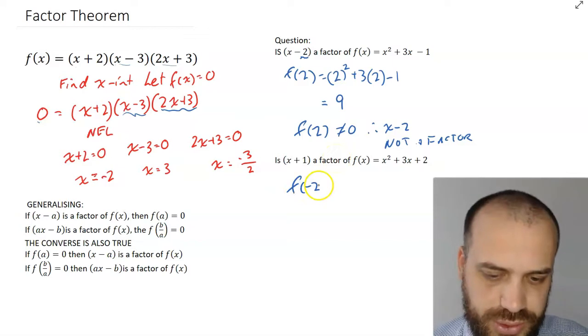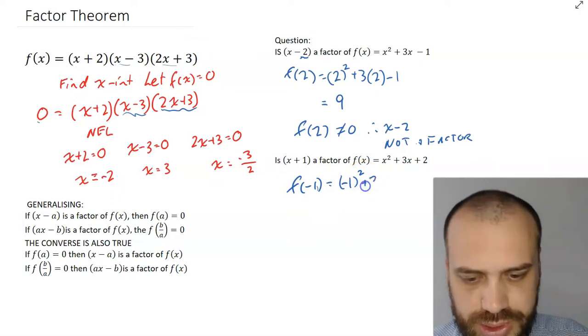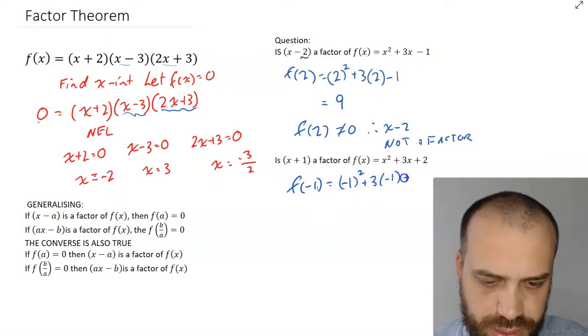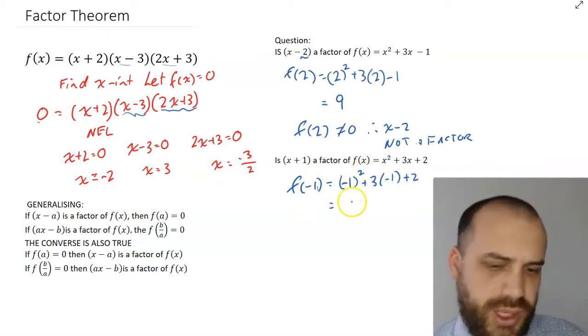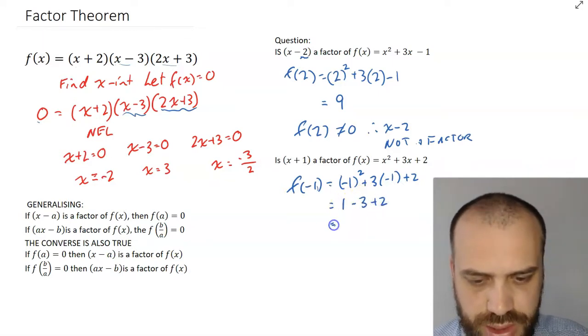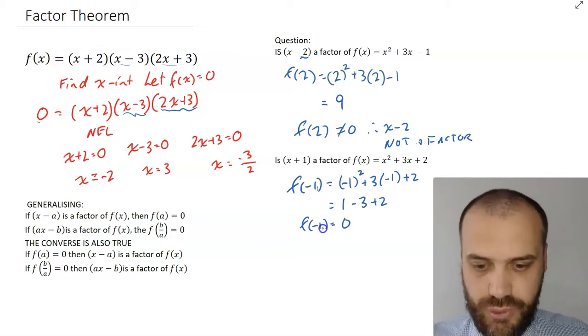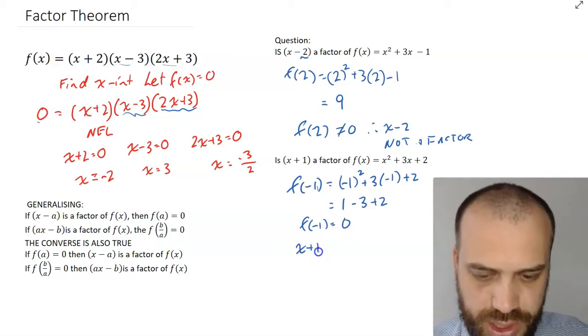So, f(negative 1) equals negative 1 squared plus 3 times negative 1 plus 2. Negative 1 squared is 1 minus 3 plus 2 equals 0. Now, because f(negative 1) equals 0, therefore, (x + 1) is a factor.